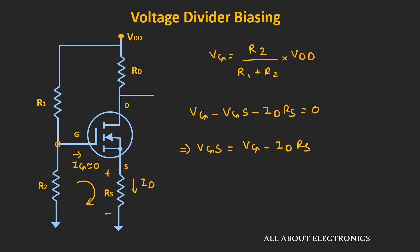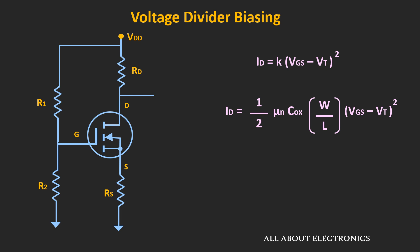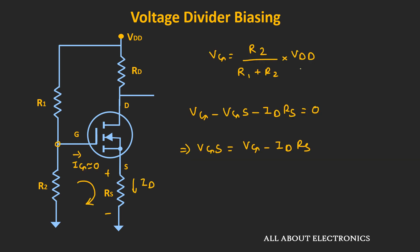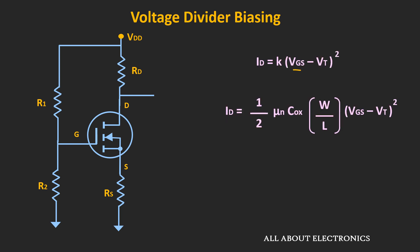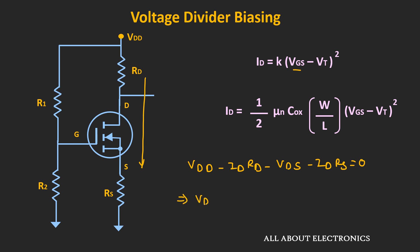Assuming the MOSFET is operating in the saturation region, the drain current ID can be given by the saturation expression. By substituting the value of Vgs from the previous expression and solving the resulting quadratic equation, we can find the drain current for the given value of the gate voltage Vg. Once we know the drain current ID, by properly selecting the value of resistor Rd, we can ensure that the MOSFET is operating in the saturation region. Applying KVL in the outer loop: Vdd − ID × Rd − Vds − ID × RS = 0, giving Vds = Vdd − ID × (Rd + RS).